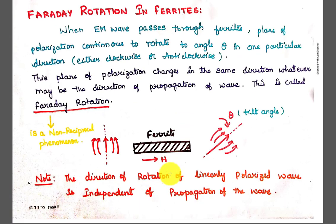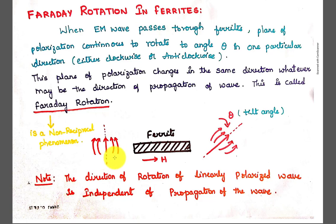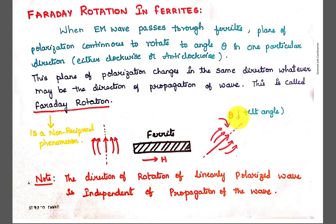Coming to Faraday's rotation in ferrites: when an electromagnetic wave passes through a ferrite, we consider a ferrite rod of proper length placed under a DC magnetic field. Then a linearly polarized wave propagates through this ferrite material. It continues to rotate by an angle theta, considered the tilting angle. This is the initial position of the linearly polarized wave. After passing through the ferrite material, it makes an angle in a clockwise direction of angle theta.